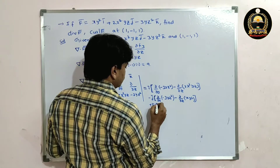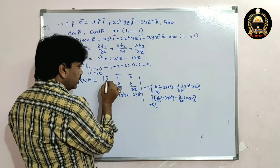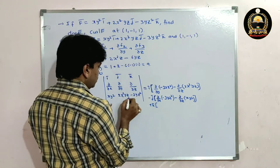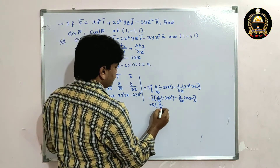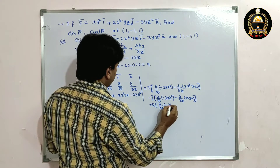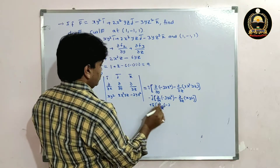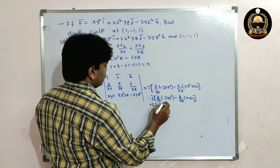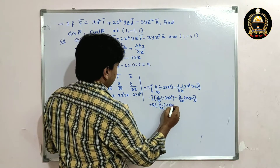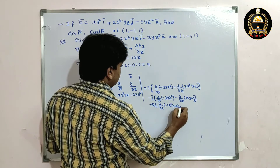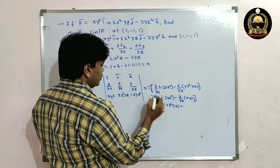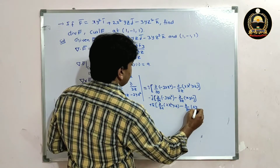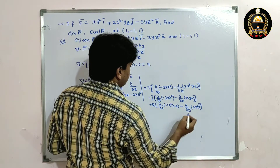Plus k̄ component — leave first row and third column, we get [∂/∂x of (2x²yz) minus ∂/∂y of (xy²)].